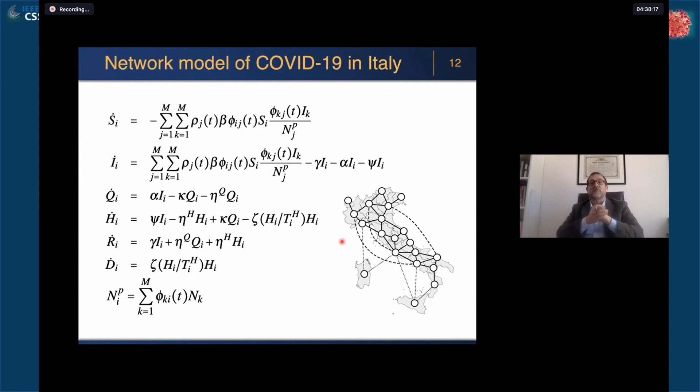If we add the flows to the regional model, what we get is the network model that we considered and played with over the past few weeks. I must say that network models or SEIR network models abound in the literature. We adapted a model that was proposed to model dengue fever in Brazil in 2015 and in earlier papers in 2003.